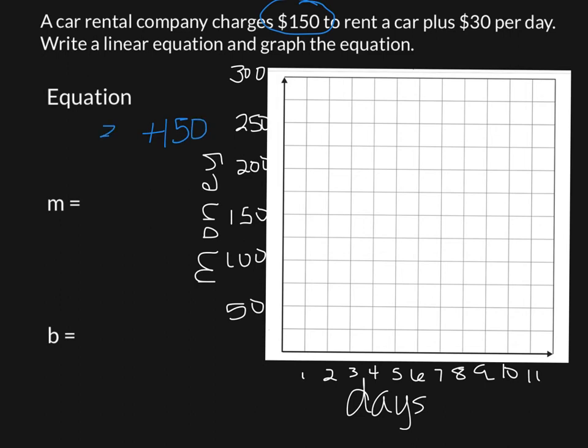Now, the $30 per day is what changes. If they have it one day, it's $30 plus the $150. If they have it two days, it's $60 plus the $150. And you can see our labels, our days, and money. So that makes this money. And if you look, this is the same as our slope-intercept form. Y equals MX plus B. So my slope is going to be 30. But remember, we like it in a fraction, so I'll put it over 30 over 1. And my Y-intercept is 150.